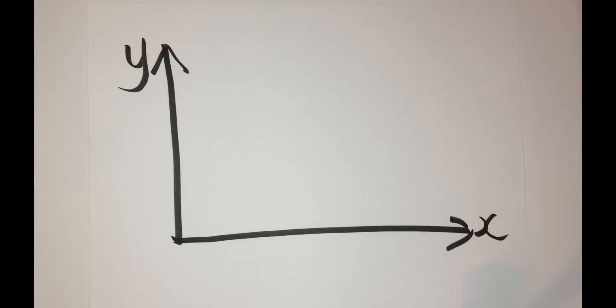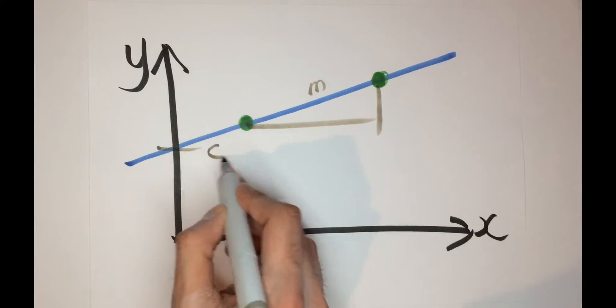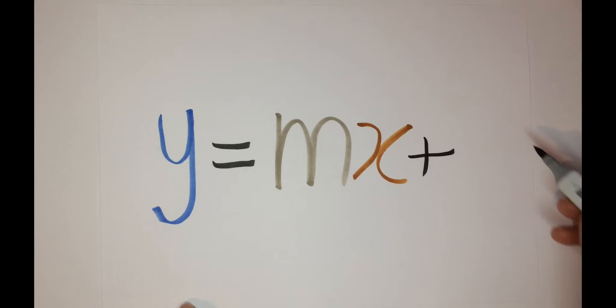Now if you remember back to high school math when you connected two points on a graph with a line, you could actually solve for the linear equation of the line by hand, by finding the slope and the intercept of the equation y equals mx plus c.